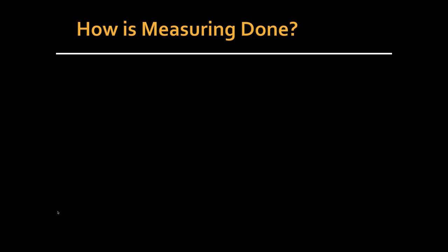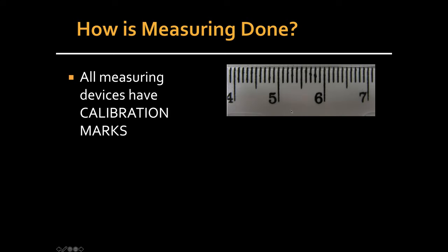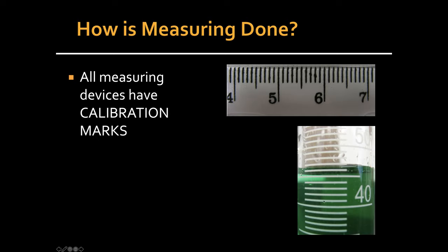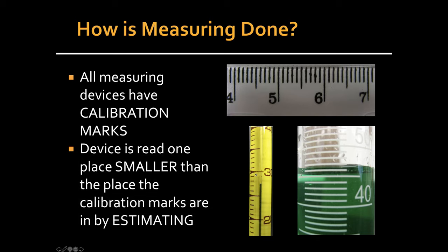Now, how exactly do we do measuring? Well, if you look at a measurement device, there are calibration marks. Those are these individual little markings that are on your measuring device, or these markings here, or these individual markings here. When you read a measuring device, you always read it one place smaller than whatever place the calibration marks are.